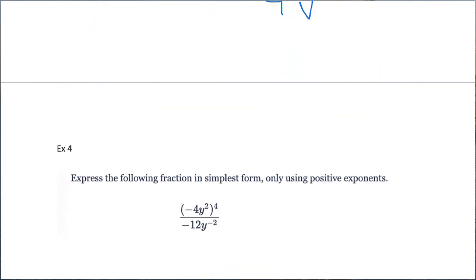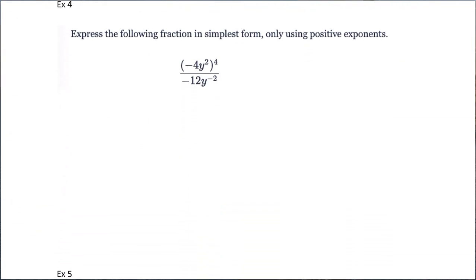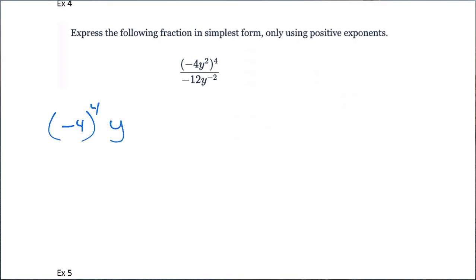Alright. Take something like this one, just getting a little bit more complicated. Same question. Might need to calculate if you can't raise. If you don't know what 4 to the 4th is, so we got negative 4 to the 4th, y to the 8th, divided by negative 12, y to the negative 2.